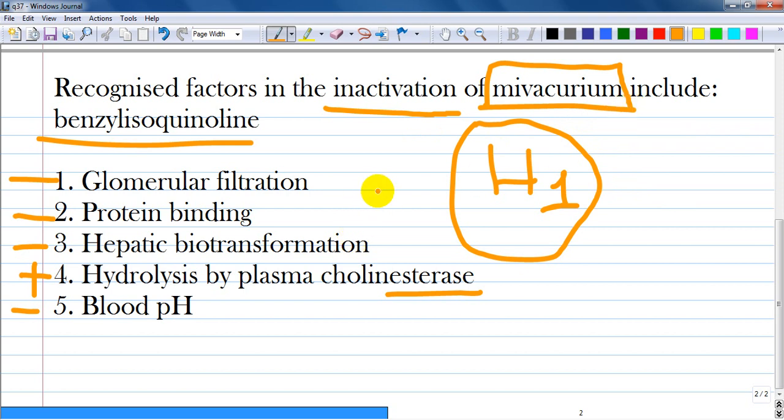This question is the single best answer. Recognized factors in the inactivation of mivacurium include the following: glomerular filtration, protein binding, hepatic biotransformation, hydrolysis by plasma cholinesterase, and blood pH.